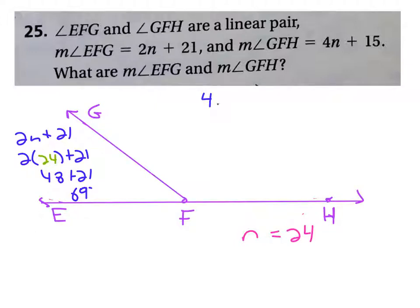Now do it for the other expression, 4N plus 15, with N being 24. That's 96 plus 15, which is 111 degrees.